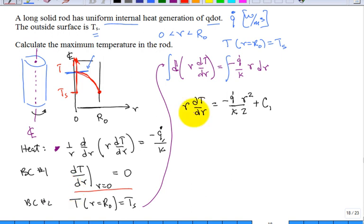So if I apply the boundary condition number 1, I get, first of all, at r equal to 0, it's 0, then times the derivative dT dR at 0. That's 0. So the left-hand side is 0. We have minus q dot divided by 2k, and then r is 0, or r is 0 squared, and then we have c1. Well, guess what c1 is? We conclude c1 is 0, so you can just delete that. And so we've used the first boundary condition.